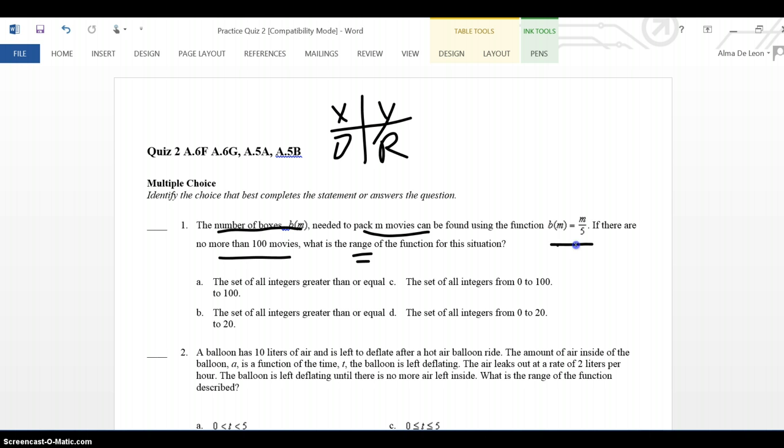But in an equation, the Y is usually on the left side by itself. And in this equation, what we have on the left side by itself is the BM. BM happens to be our range. And in this case, the range is the number of boxes that you need to use to box your movies.